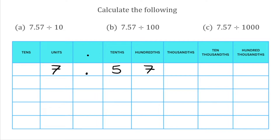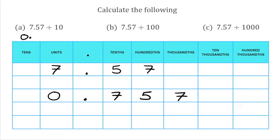Because I'm dividing by 10, the number is going to get smaller, which means I'm going to move all the digits to the right. There's one zero in 10, so we're only going to move the digits by one place. The 7 that was in the hundredths column is now in the thousandths. The 5 that was in the tenths is now in the hundredths. And the 7 that was in the units column is now in the tenths. We just put a single zero in the units column, so our answer is 0.757.